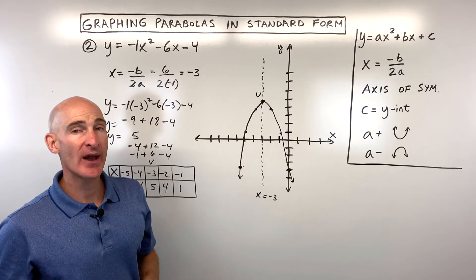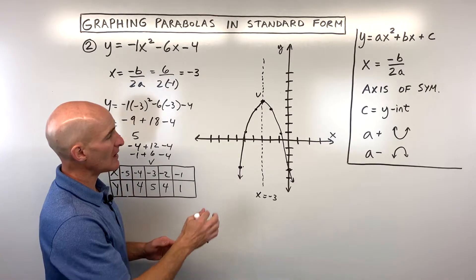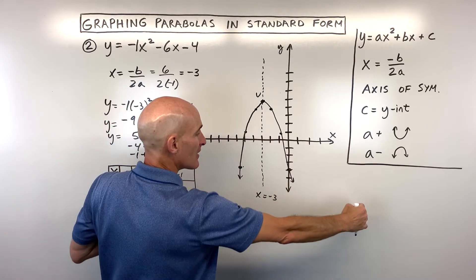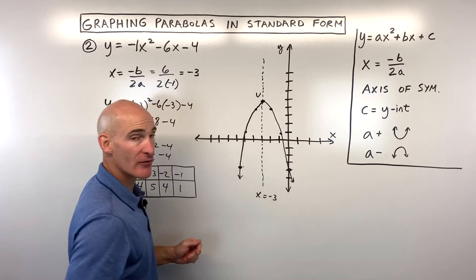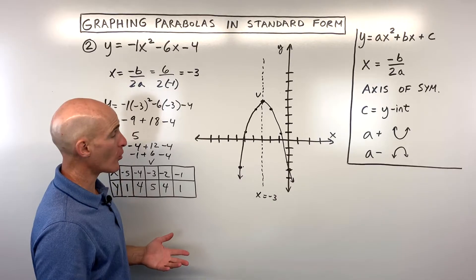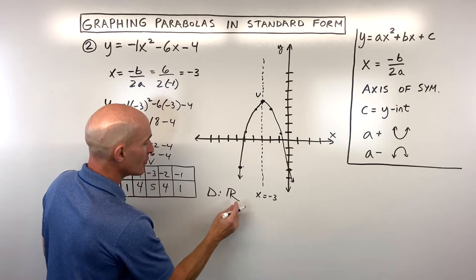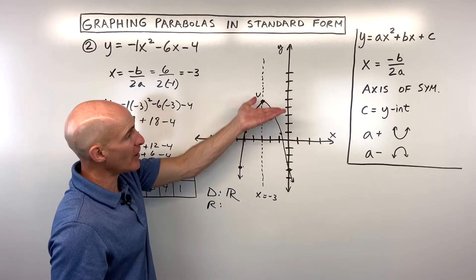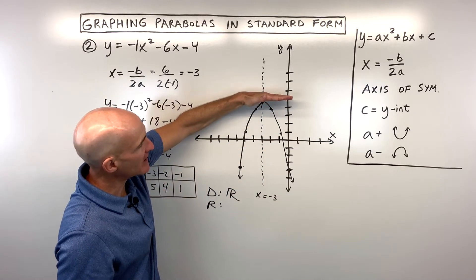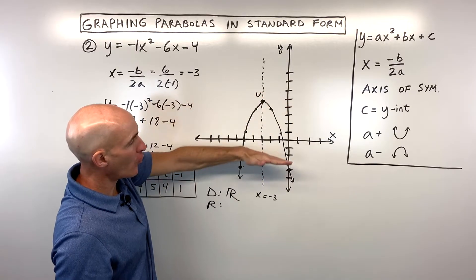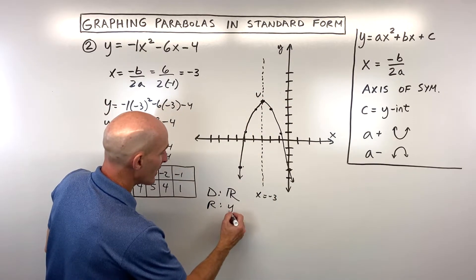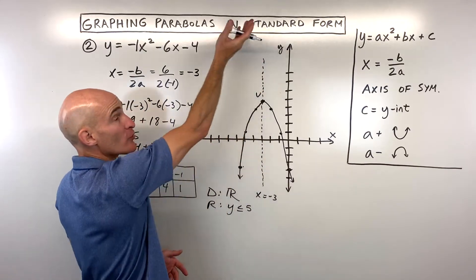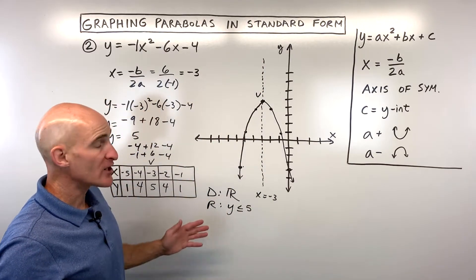Sometimes they'll ask for the domain and range. Domain means what can the x values be — the graph goes left and right forever, so the domain is all real numbers. The range is what can the y values be — the highest y can be is 5 or lower, so the range is y less than or equal to 5. If it were opening up, the range would use greater than or equal to.